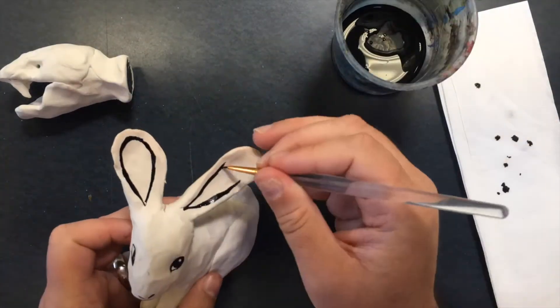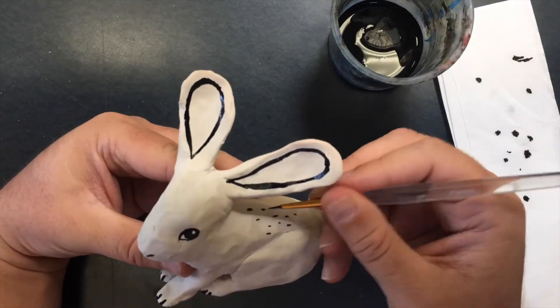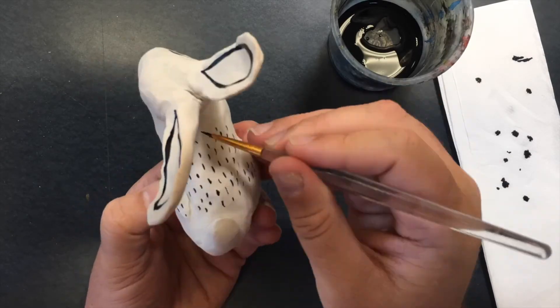We will be using these sculptures for another project, so leave most of the sculpture white, but you can add texture and details with a little bit of black.